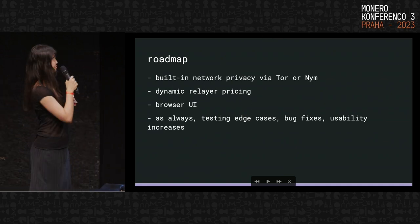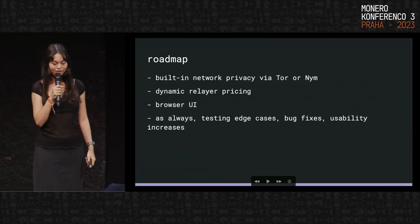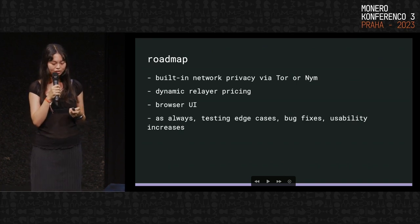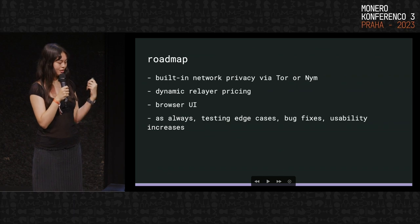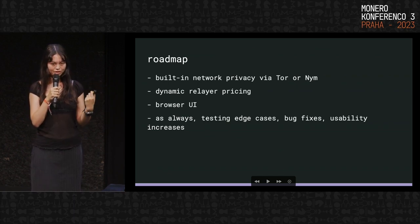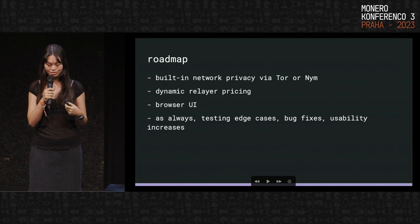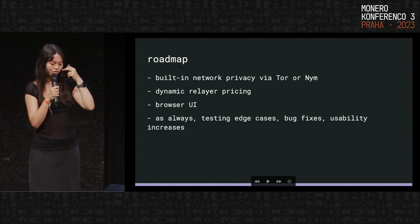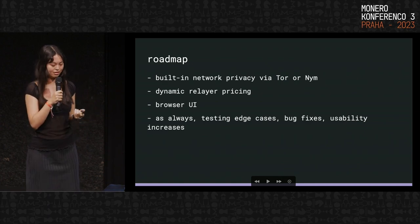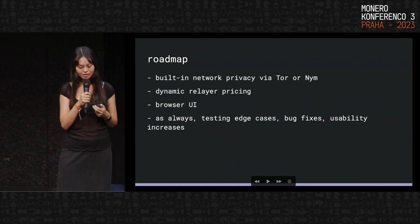A little bit of the roadmap for the future. One thing that we definitely want to add is built-in network privacy. It uses the libP2P library, but there isn't really a good built-in privacy transport for it yet. Ideally we'd like to add that via Tor or Nym or something like that.